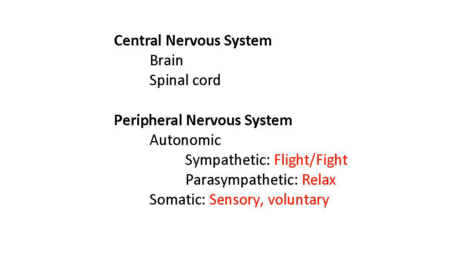To review the parts of the nervous system: the two large divisions are the central nervous system and the peripheral nervous system. The central nervous system is the brain and the spinal cord. The peripheral nervous system can be broken down further into two parts: the autonomic nervous system and the somatic nervous system. The somatic nervous system is involved in transmitting sensory information to the brain and also in voluntary movement. The autonomic nervous system can be further broken down into the sympathetic and the parasympathetic nervous system.